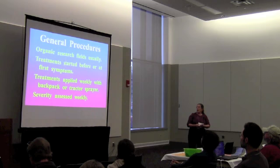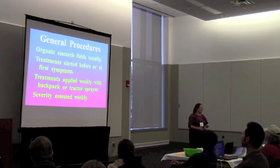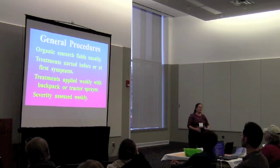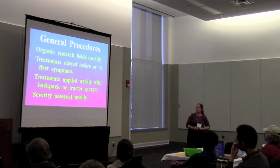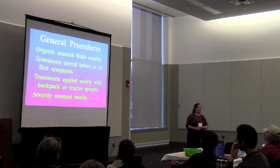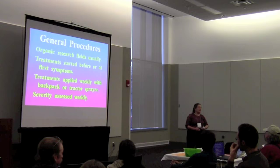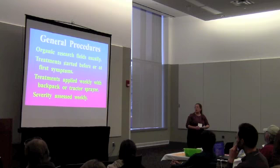Most of my treatments start either before we've seen symptoms or right at first symptoms — because unlike an insect that you can kill with an insecticide, a plant disease spot on the leaf cannot be eliminated. It's really important to start treatments before or right at the start of a disease to get effective control. Most treatments go out weekly with a backpack sprayer, and for larger powdery mildew plots in cucurbits I use a tractor sprayer. We assess severity weekly.